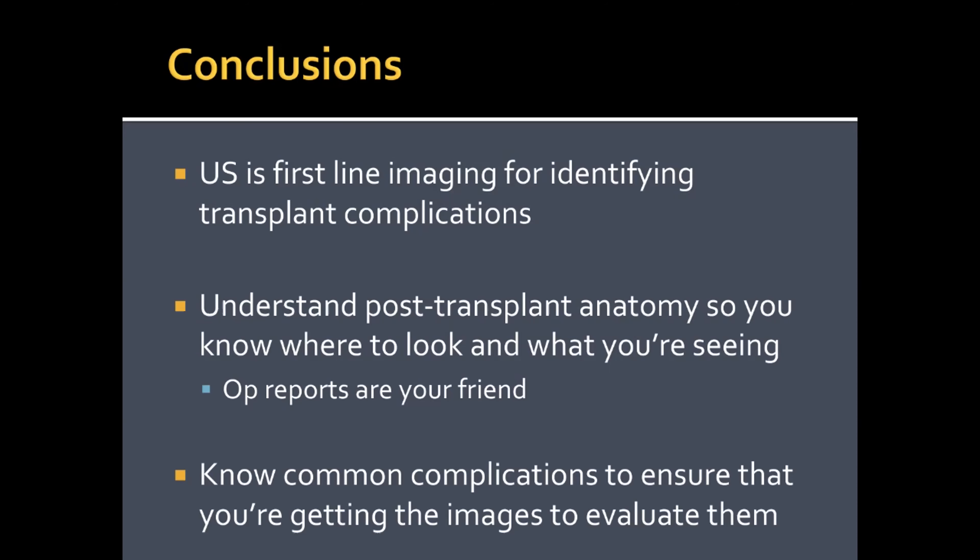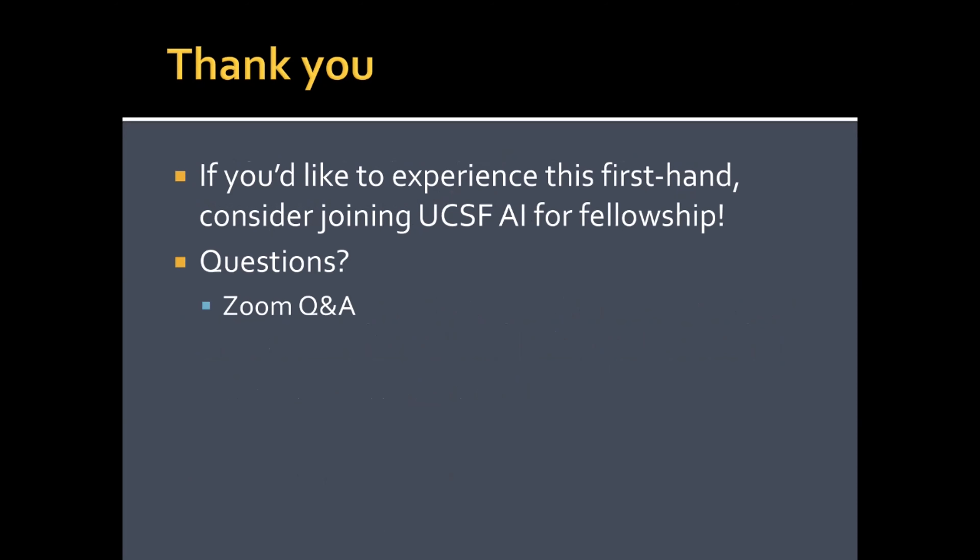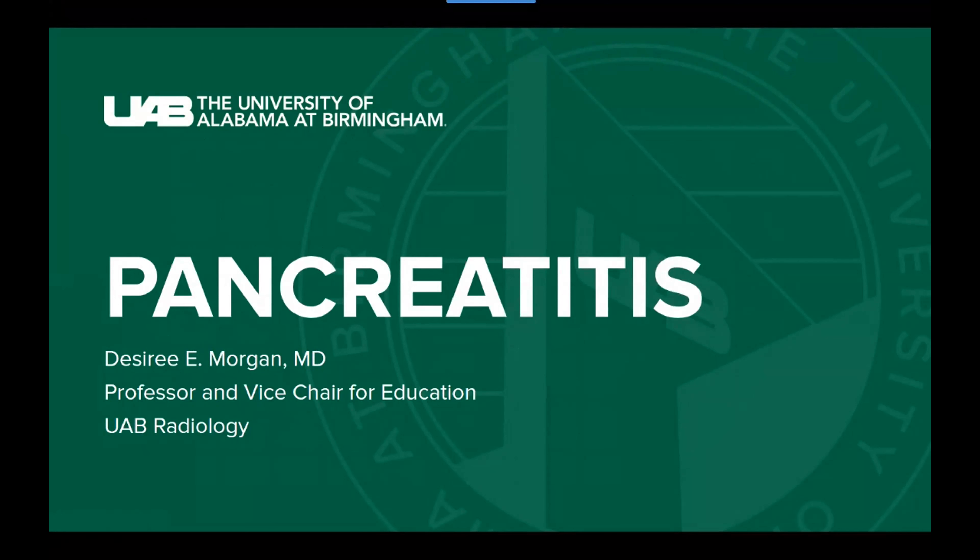In conclusion, ultrasound is the first-line imaging for identifying transplant complications. The key is understanding post-transplant anatomy so you know where to look — the operative report is your friend — and knowing the complications so the eye can see what the mind knows, ensuring you obtain the images needed to evaluate possible complications. Thank you for your time, and please consider joining UCSF for an abdominal imaging fellowship.